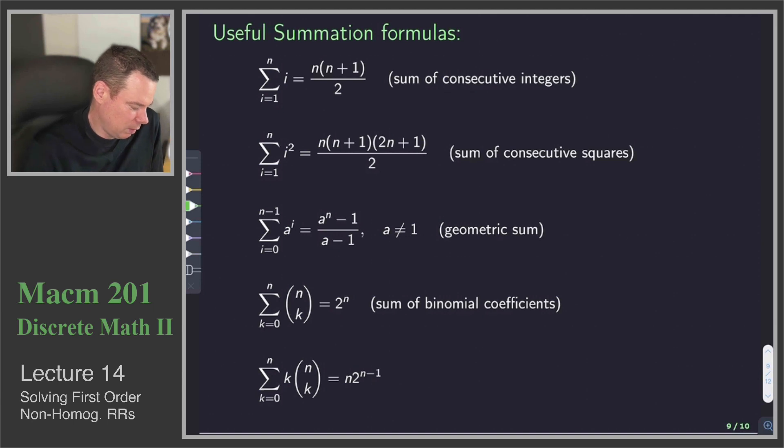From a discrete math perspective, you probably would have seen some of these things coming up in calculus, but I'm not going to assume that you know calculus. So how are we going to justify these? This is one of my favorite ones. Sum of consecutive integers.